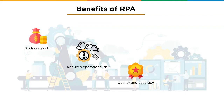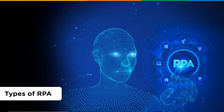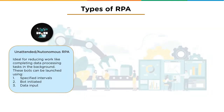Quality and accuracy — RPA offers services to processes with a high probability of human error, increasing accuracy. Robots are reliable, consistent, and don't tire. Scalability — with RPA, companies can make adjustments based on seasonality and easily scale operations up or down as needed.